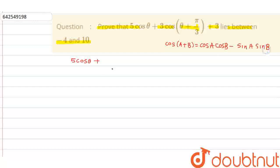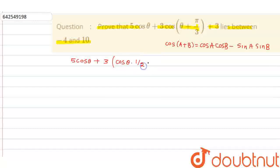So basically this can be written as 5cosθ plus 3 times cos(A + B). Applying the formula, cos(A + B) = cosA·cosB − sinA·sinB. So this becomes cosθ · cos(π/3), and cos(π/3) = 1/2. Minus sinθ · sin(π/3), and sin(π/3) = sin60° = √3/2.